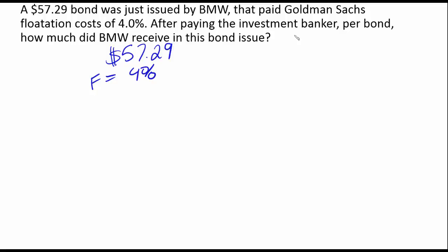To deal with this, Goldman Sachs actually finds the buyers, finds the investors, and gets the funds to BMW. That's Goldman Sachs' job — that's what they do all the time. BMW just has to focus on making cars and motorcycles.